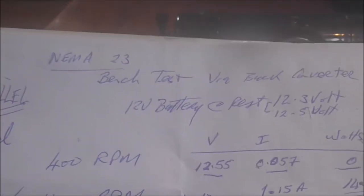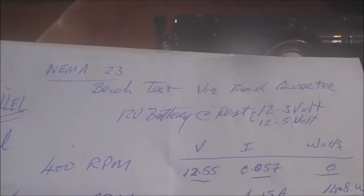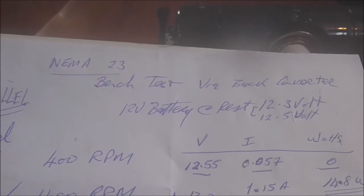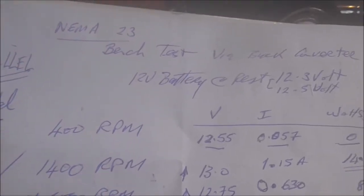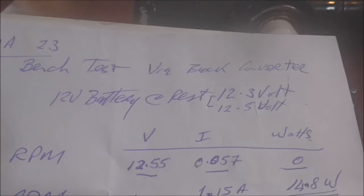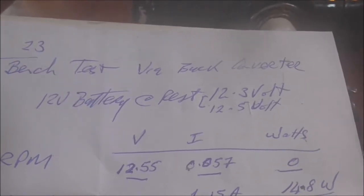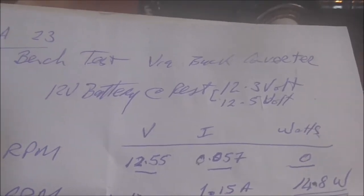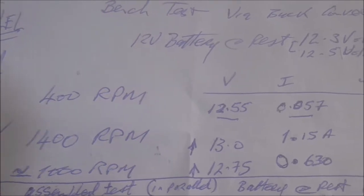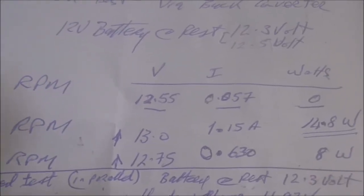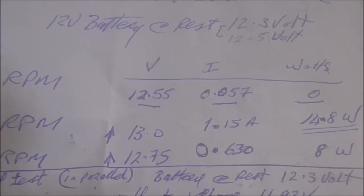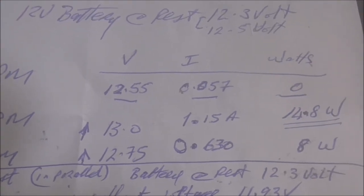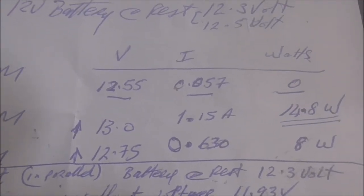Now I did some bench tests at home using a battery operated drill that had a setting of 400 RPM and 1400 RPM to give me an idea. So a bench test via a buck converter. The battery was at rest. So at 400 RPM the voltage would come up to 12.55, a little bit of milliamps but no watts.